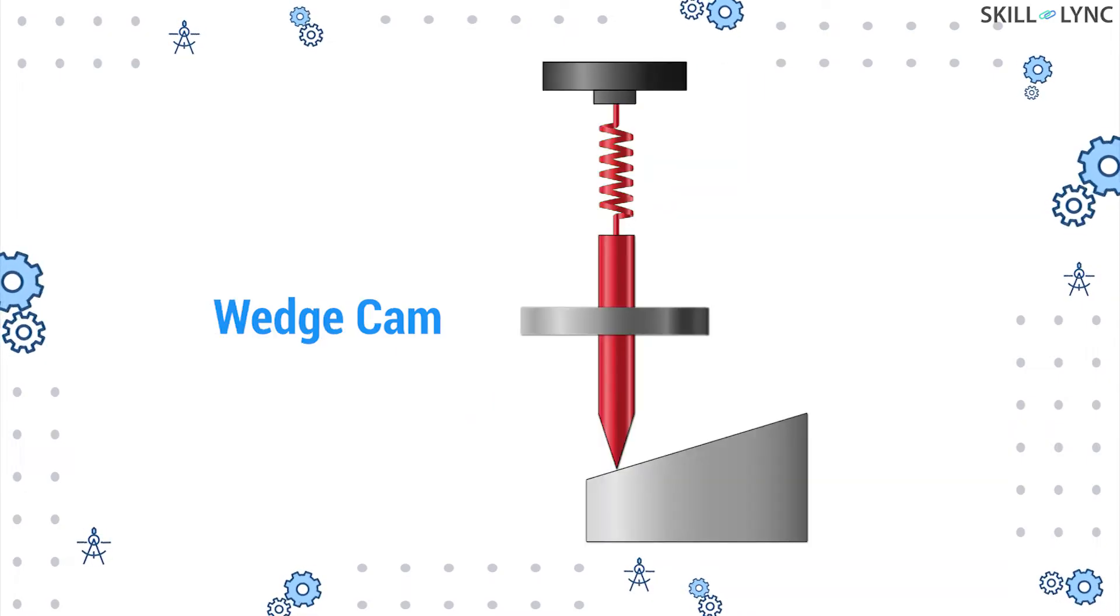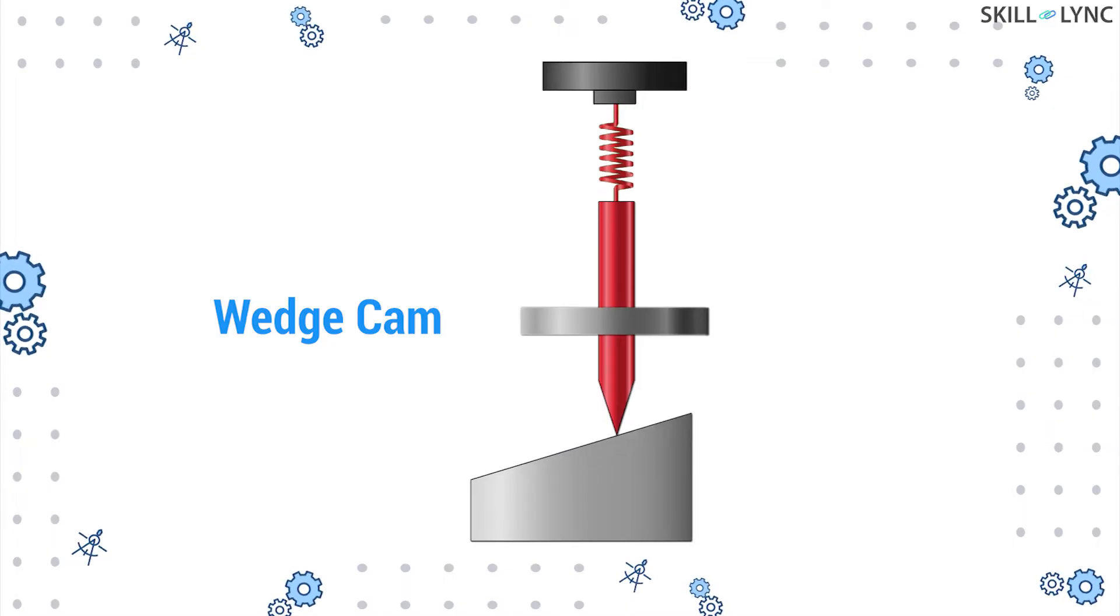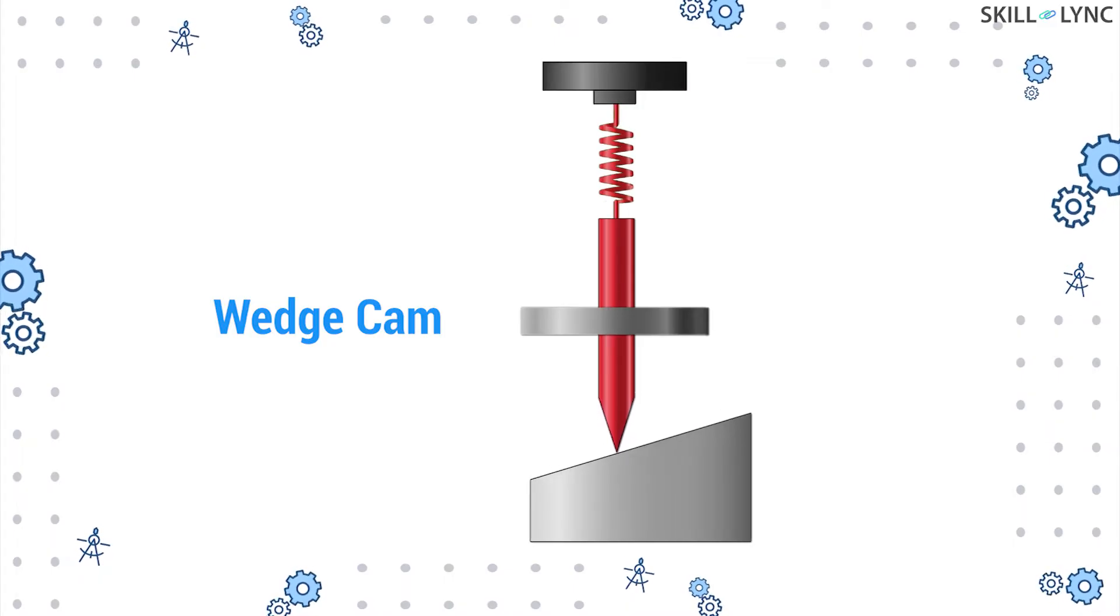The third type is the wedge cam. This type of cam is in the shape of a wedge and here, the cam has a sliding motion.